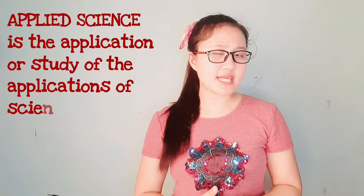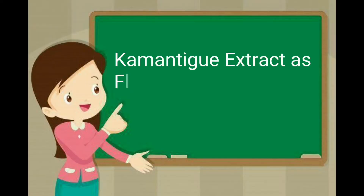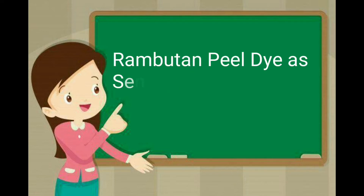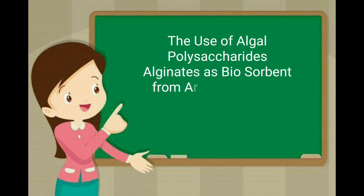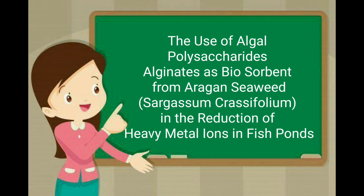Number two is applied science. Applied science is the study of applications of scientific knowledge for technological advancement — using science concepts to create a product or project related to the advancement of technology. Examples include kamantigay extract as a fluorescent tracer, rambutan peel dye as a sensitized solar cell, and the use of algal polysaccharides (alginates) as biosorbent from aragon seaweeds in the reduction of heavy metal ions in fish ponds.